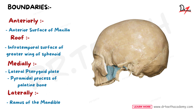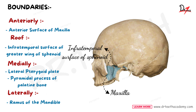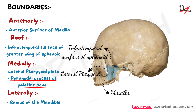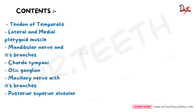Let's talk about the boundaries of the infratemporal fossa. Anteriorly, it is bounded by the anterior surface of maxilla. Its roof is made up of the infratemporal surface of the greater wing of sphenoid. Medially, it is bounded by the lateral pterygoid plate and the pyramidal process of the palatine bone. And laterally, by the ramus of mandible.